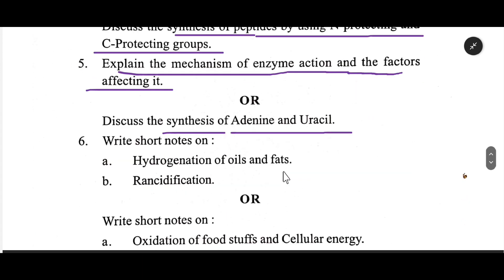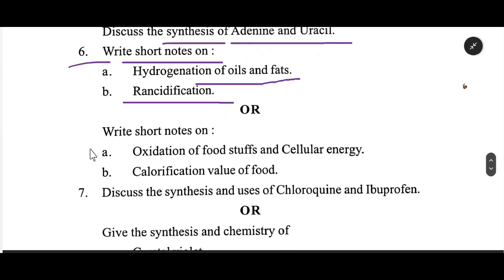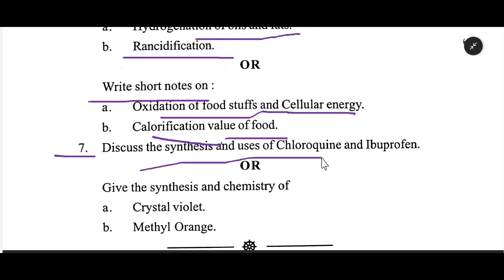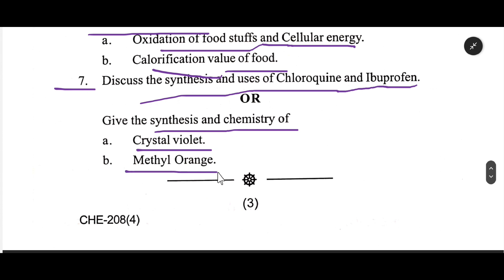Number six: write short notes on hydrogenation of oils and fats, saponification. Write short notes on oxidation of food substances and cellular energy, calorific value of food. Number seven: discuss the synthesis and uses of chloroquine and primaquine. Give the synthesis and the chemistry of crystal violet and methyl orange.